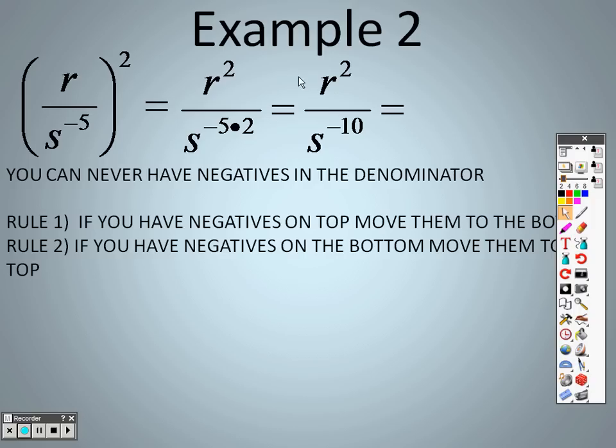If it's on the bottom, then I move it to the top, and if it's on the top, I move it to the bottom. Wherever the negative is, you just got to move it. Negative on the bottom, move it to the top. Negative on the top, move it to the bottom. So since it is a negative on the bottom, I move it to the top, so I get r squared and s to the 10th power.